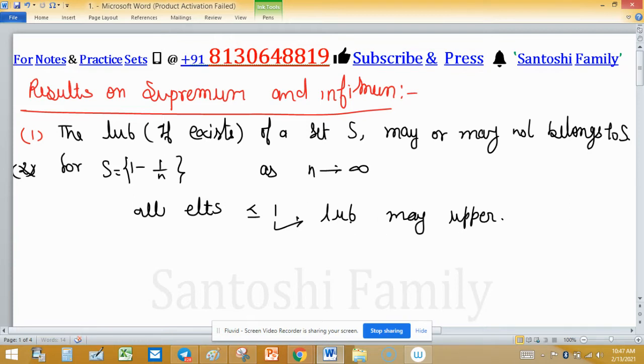That is, 1 is least upper bound, but many upper bounds exist for this set in the real field, because for an upper bound there is another upper bound which is larger, and we can find this by Archimedean property.